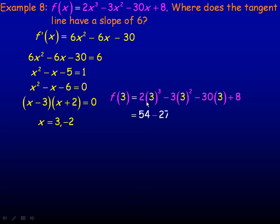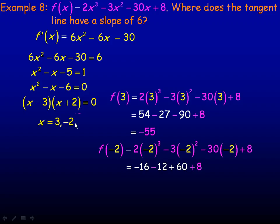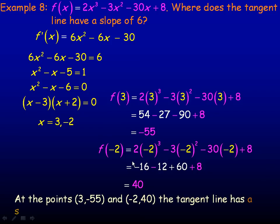We'll do the same thing for the -2. And the y value works out to be 40. So (3, -55) and (-2, 40) are the two points where the tangent line has a slope of 6.